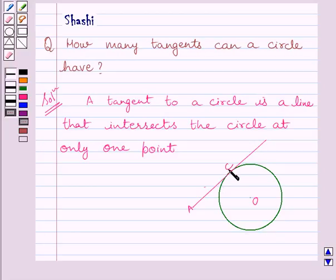So, one tangent can be drawn at every point of the circle. We know circle is made up of infinitely many points. So, infinitely many tangents can be drawn to the circle.